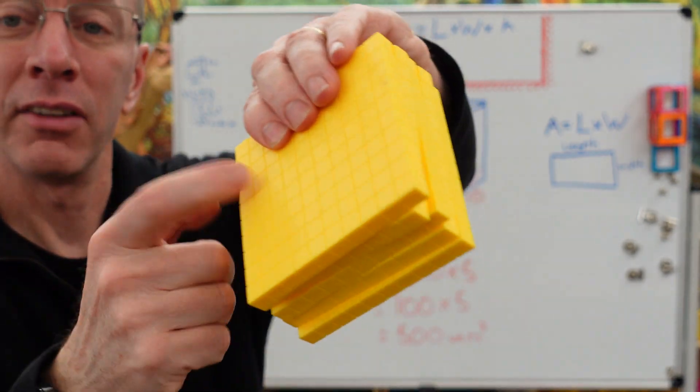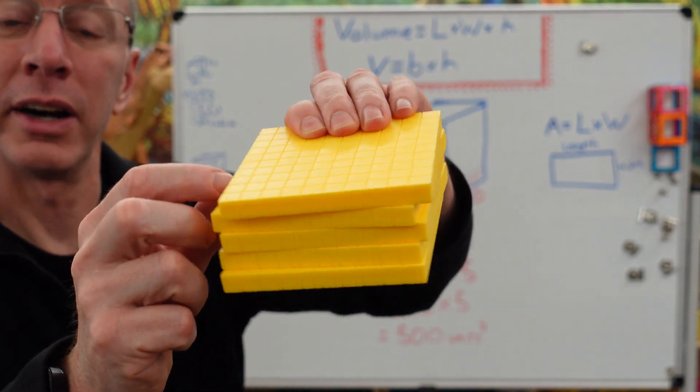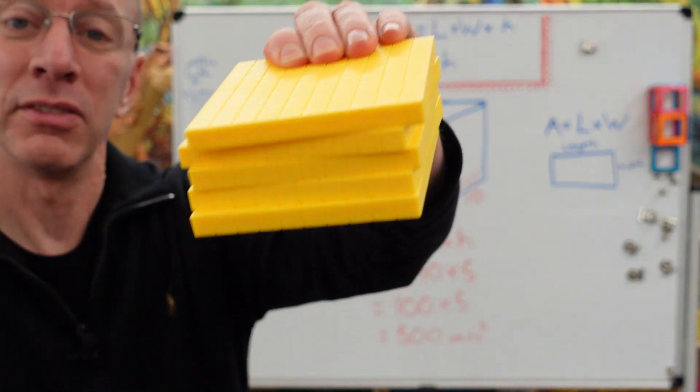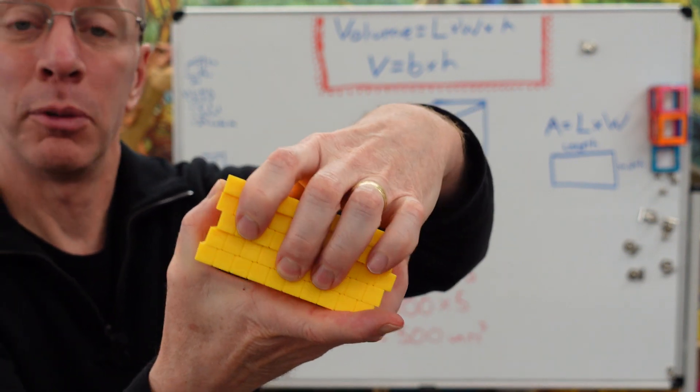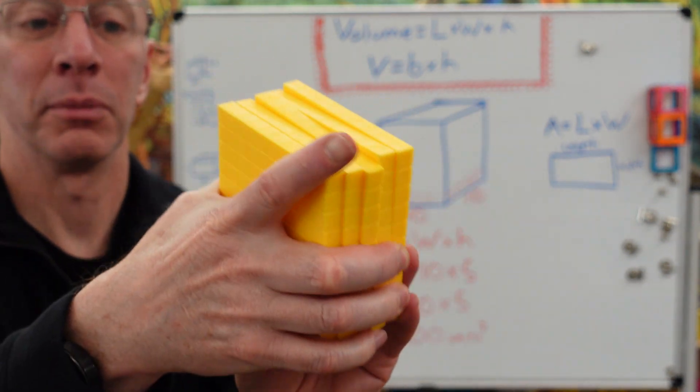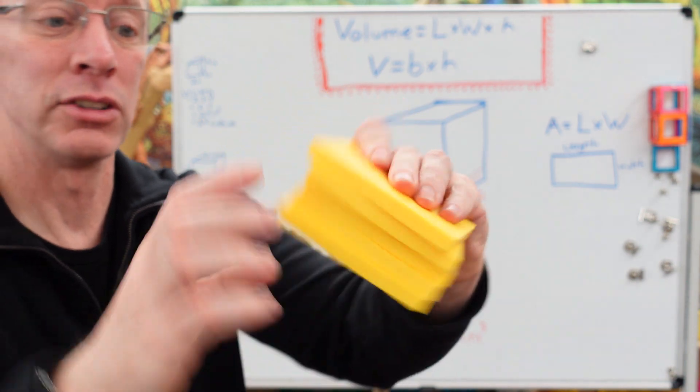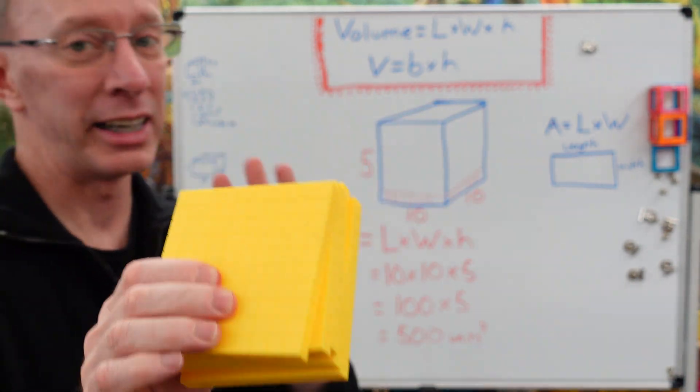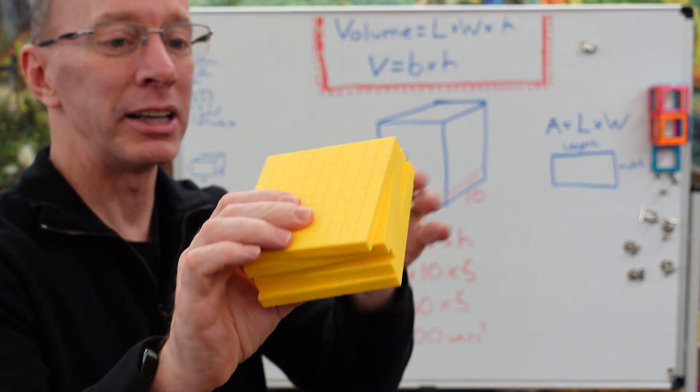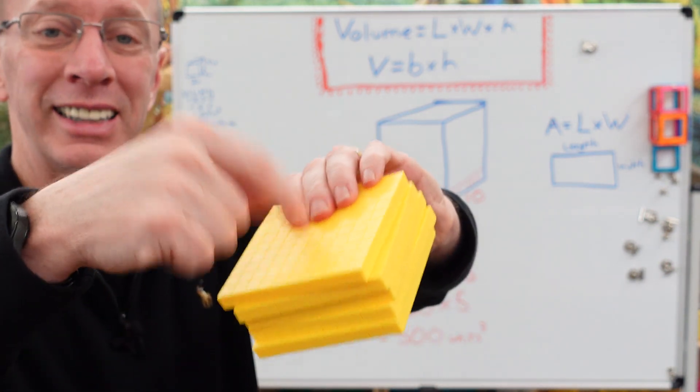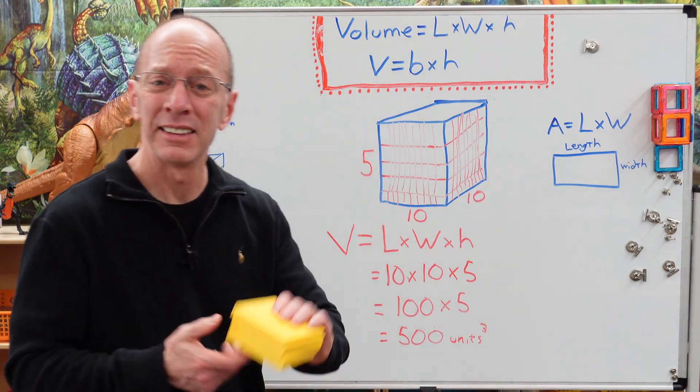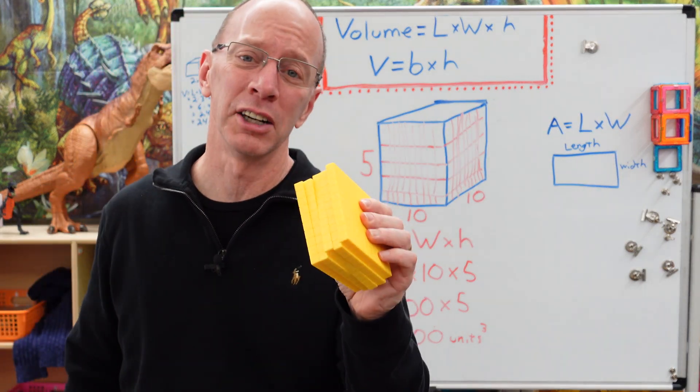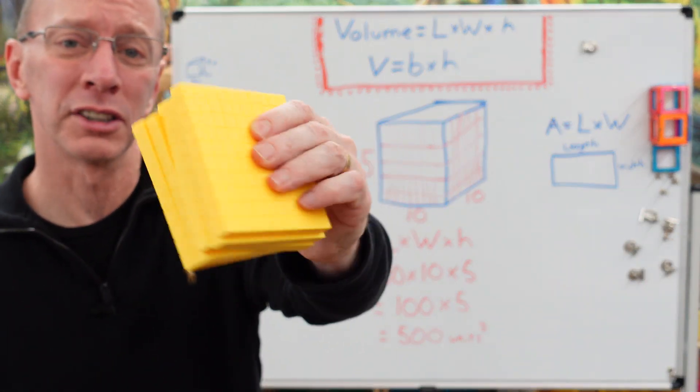So in order to see the volume of a rectangular prism, this is it. This is how many of these little squares right here, these little cubes that you can fit into a rectangular prism. And it would be 500 of them. So this is what we're trying to find is we're trying to find the volume, not the surface. It's the volume and what is inside this box right here.